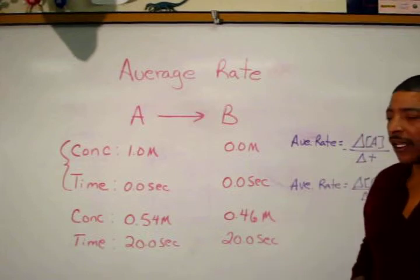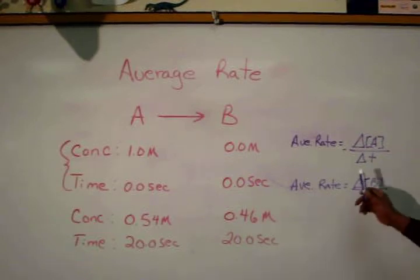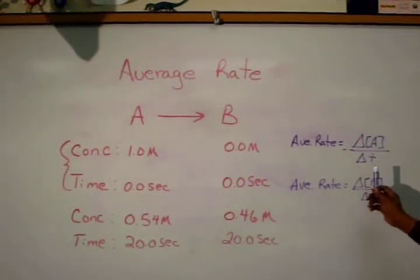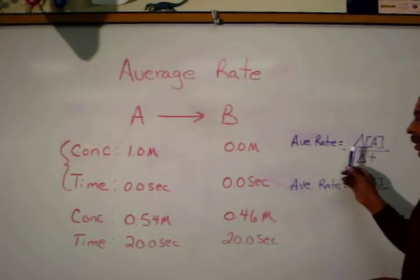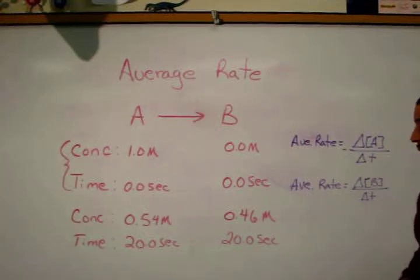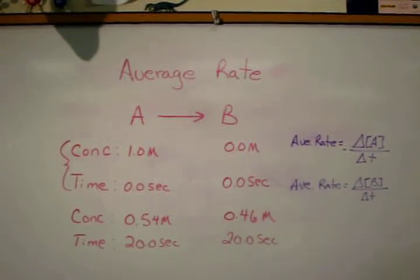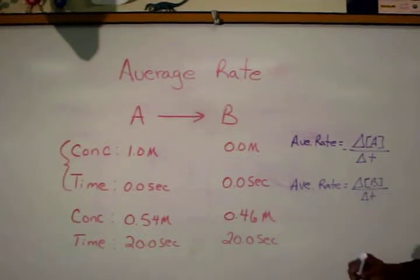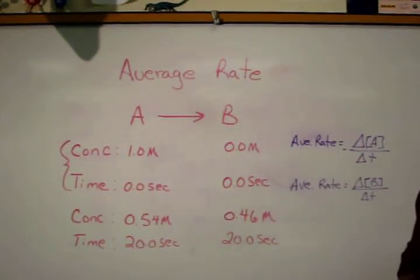The rate of this chemical reaction may be calculated as follows. The average rate is equal to the change in concentration of A divided by the change in time. In this case, a negative sign is used because A is disappearing. Alternatively, the average rate may be calculated by dividing the change in concentration of product B over the same time interval. In this case, no negative sign is written into the formula because B is being formed during the reaction.